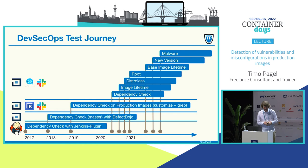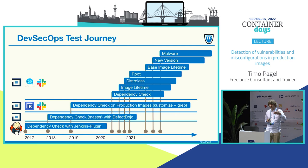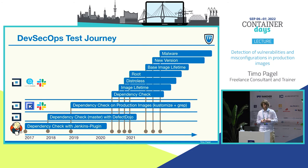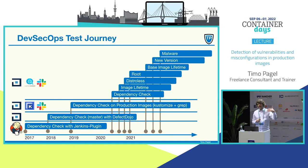You might have heard about attacks where an attacker takes over the account of an open source contributor, and due to this they compromise the build and introduce, for example, a crypto miner into a library. With a malware check, I can at least find when there is such a crypto miner or something evil inside the image. It's a bit late — it's only when it's already in production. But it's better than nothing. On the other hand, an attacker might just download the crypto miner when the image is getting executed, so this check wouldn't help in that case. But I think it's useful, that's why it's included.